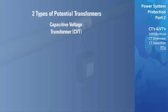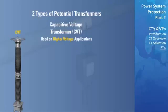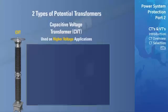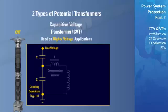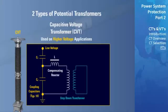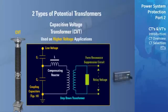Capacitive voltage transformers, or CVTs, are normally used on higher voltage applications. The CVT is basically a capacitance potential divider and consists of the following components: coupling capacitors, typically 10; compensating reactor; step-down transformer; and a ferro-resonance suppression circuit that is found just before the output terminals for connecting to a relay.